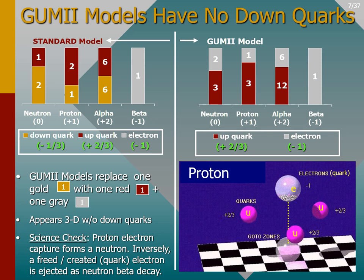Go-to zones are shown as semi-transparent spheres. In the picture of the GUMMI proton model, three up quarks are shown in purple and labeled with a U. Up quarks each have a charge of plus two-thirds and thus repel from each other; three up quarks have a total positive charge of plus two. That repulsion gets balanced with the attraction of the electron and its charge of minus one. The quark electron is shown in reflective silver and labeled with an E. The combined 3D structure has a net charge of plus one — that's what's known as a proton.